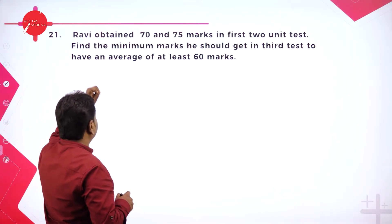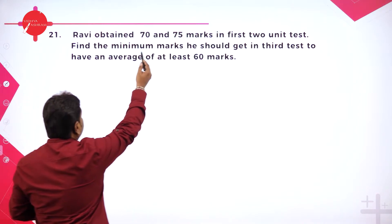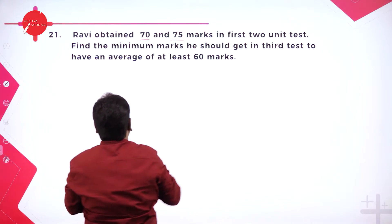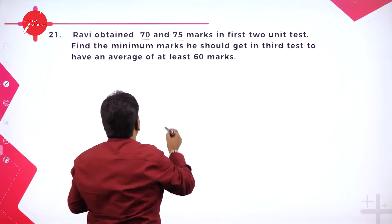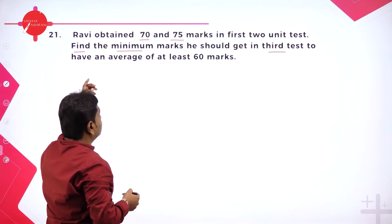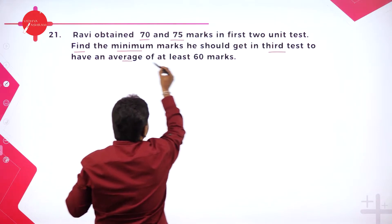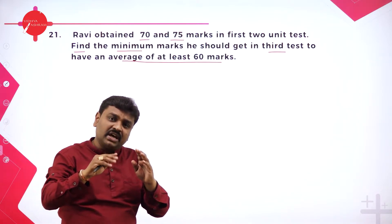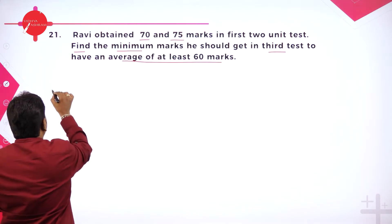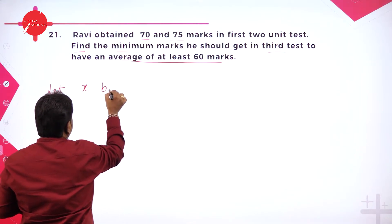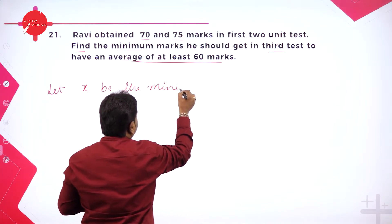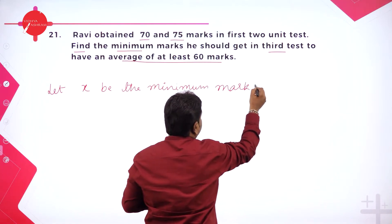They have given problem number 21 in the exercise. They want you to find the minimum marks you should get in the third test, so that you have an average of at least 60. So, assume: let x be the minimum marks in the third test.